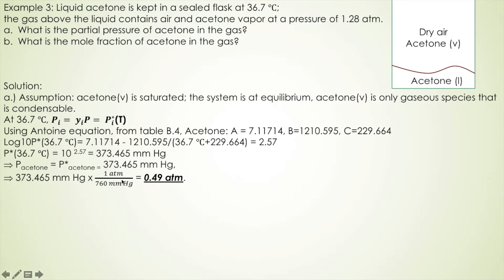Then conversion factor for changing to atm is 1 atm is equal to 760 mmHg. Then you got 0.49 atm for partial pressure.